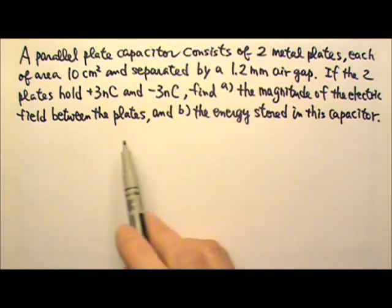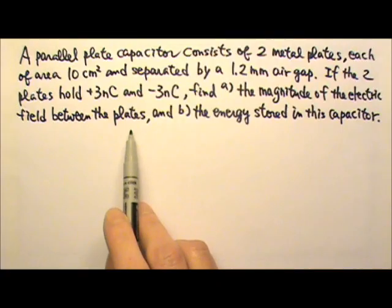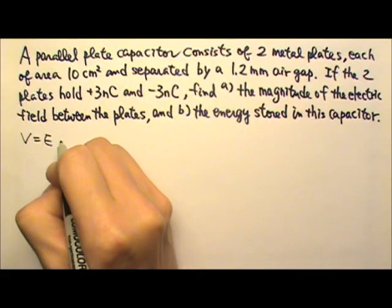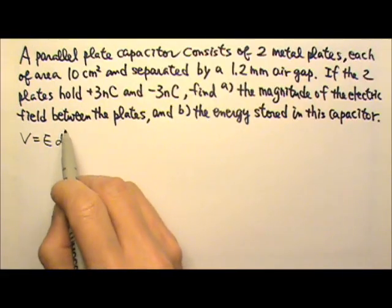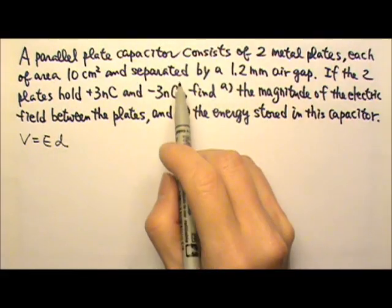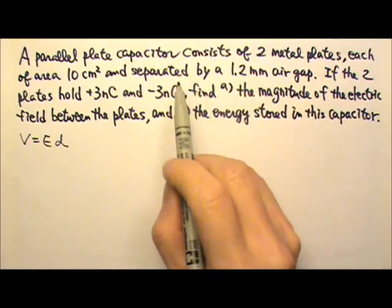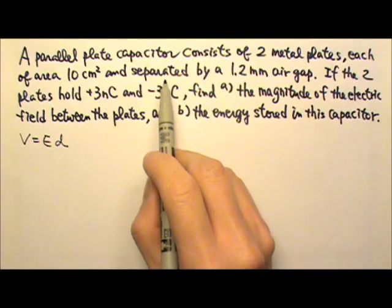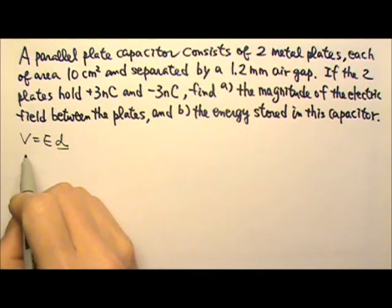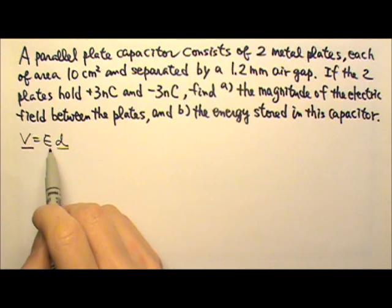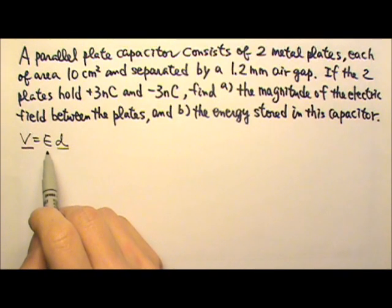Part A, we're looking for the electric field between plates, that is the uniform electric field. So we can use V equals Ed. The plate separation is already given. D is the thickness of the air gap, 1.2 mm, the separation between the two plates. So we have D, so if we can find the voltage across the two plates, we will be able to get the electric field we want.